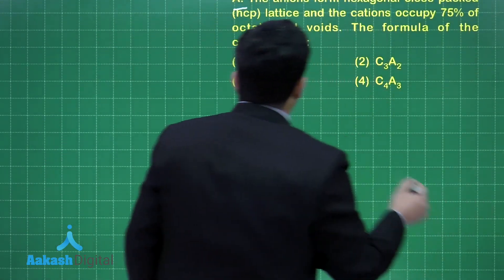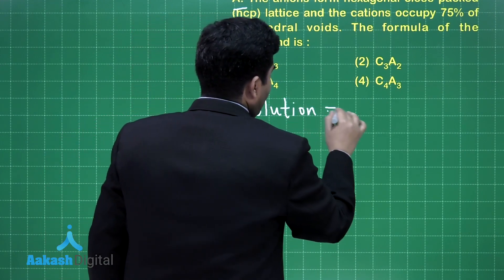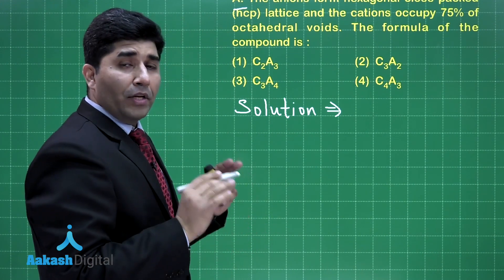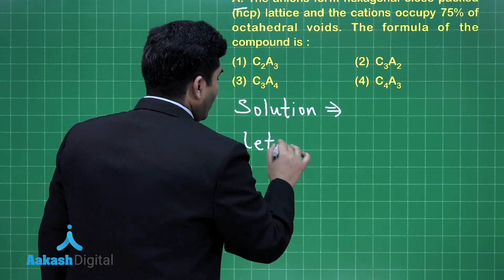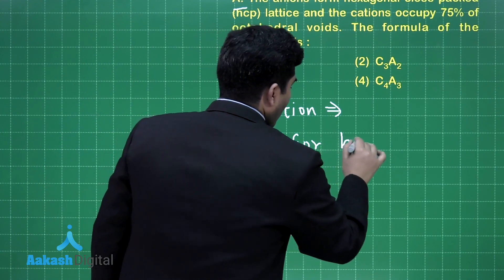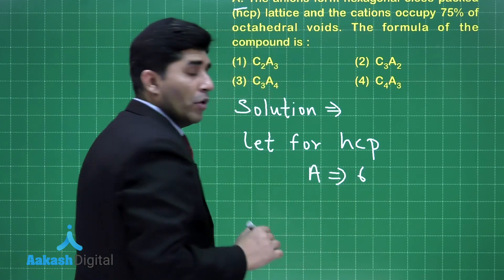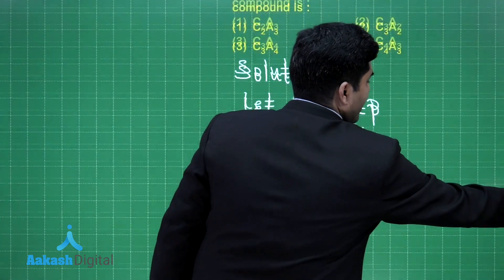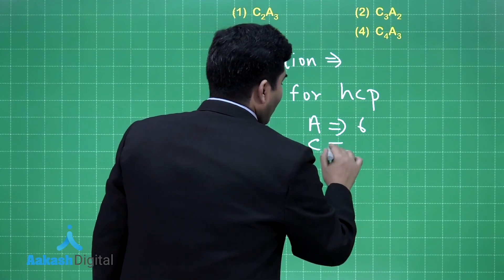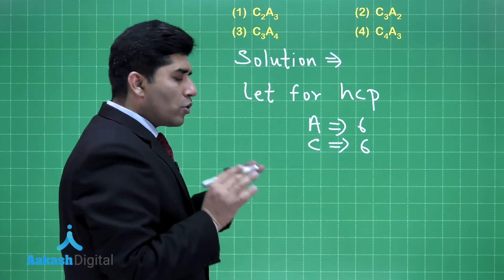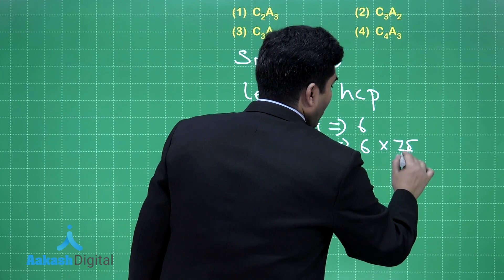Let us move on to the solution. We have to find out the ratio of C and A. For HCP, let us assume the number of atoms is 6. So how many octahedral voids will be there? Octahedral voids will be 6 and tetrahedral voids will be 12. C is present in the octahedral void. There are 6 octahedral voids but 75% are occupied, so we multiply by 75/100.